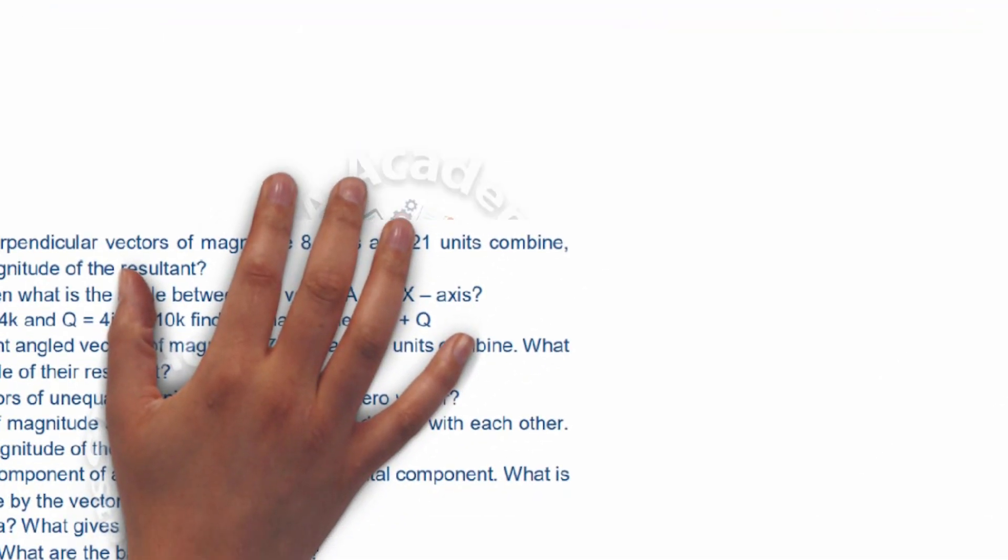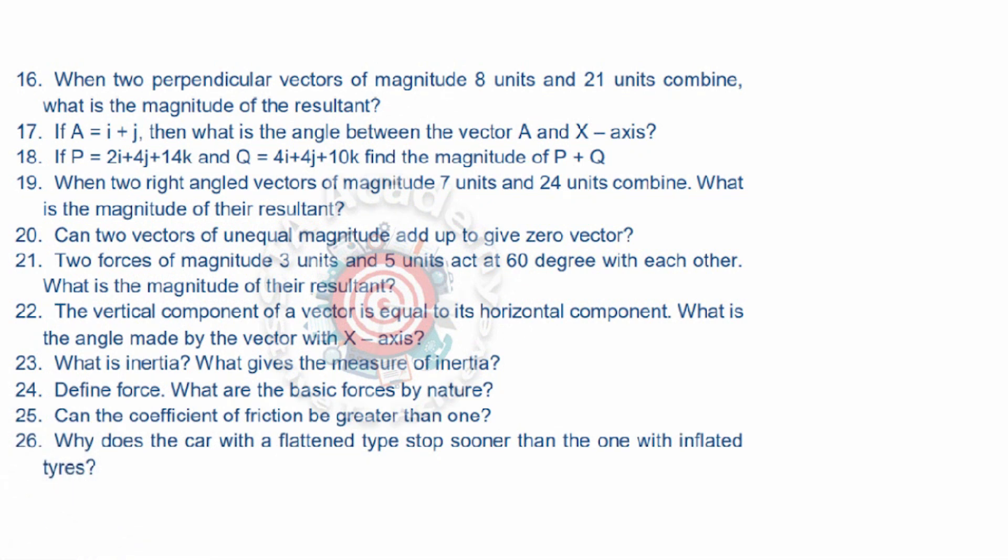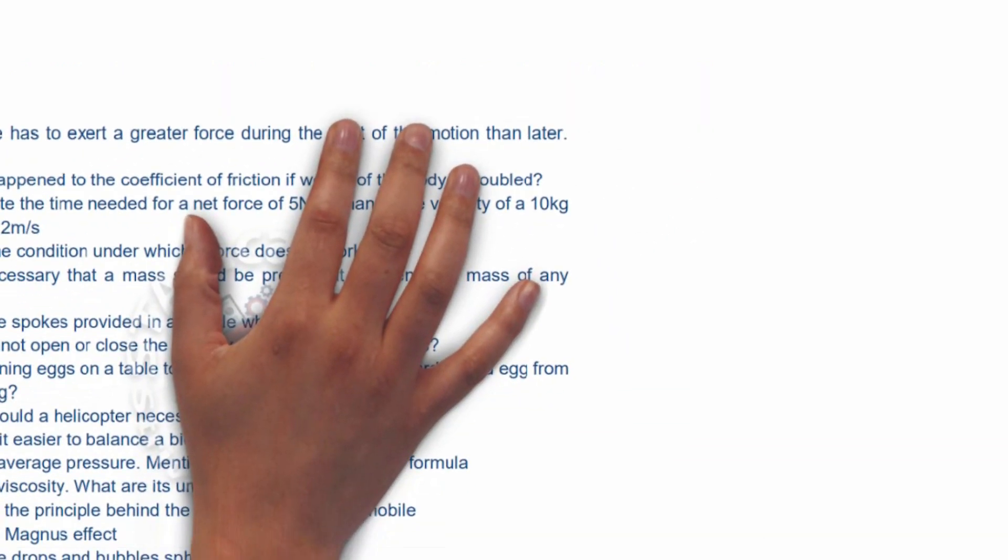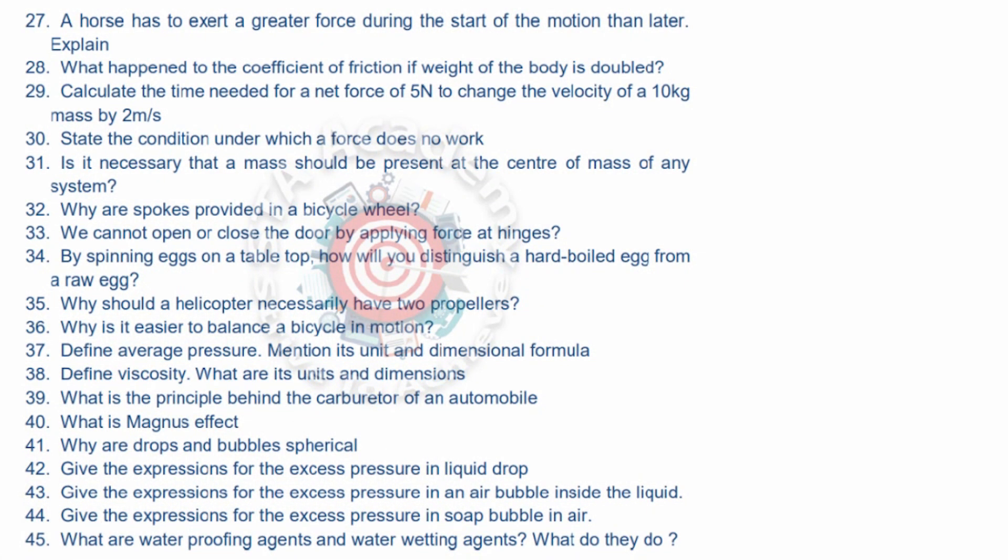Seventeen, eighteen are all numericals, very important VSAQs. Nineteen question: write angle vector of a magnitude. This is also a numerical problem. Twenty, twenty-first is also numerical. Twenty-second is also very important problem. Twenty-third: what is inertia? Give the measure of inertia. Twenty-four: define force. What are the basic forces in nature? Twenty-fifth is can the coefficient of friction be greater than one? Twenty-six: why does car with a flattened tire stop sooner than the one with the inflated tires? Twenty-seven: the horse has to exert a greater force during the start of the motion than later, explain. Twenty-eight: what happened to the coefficient of friction if weight of the body is doubled. Twenty-nine is a numerical problem.